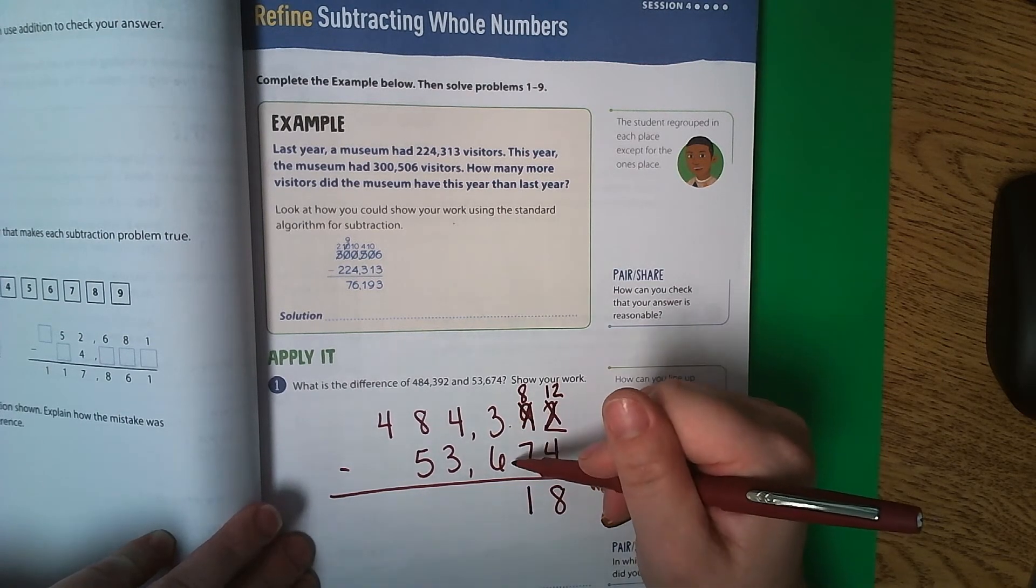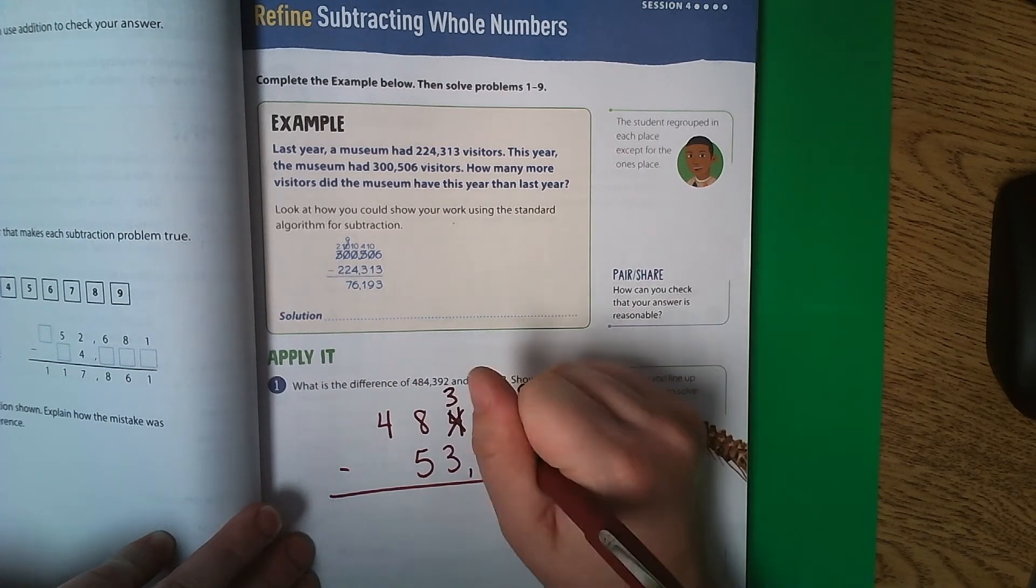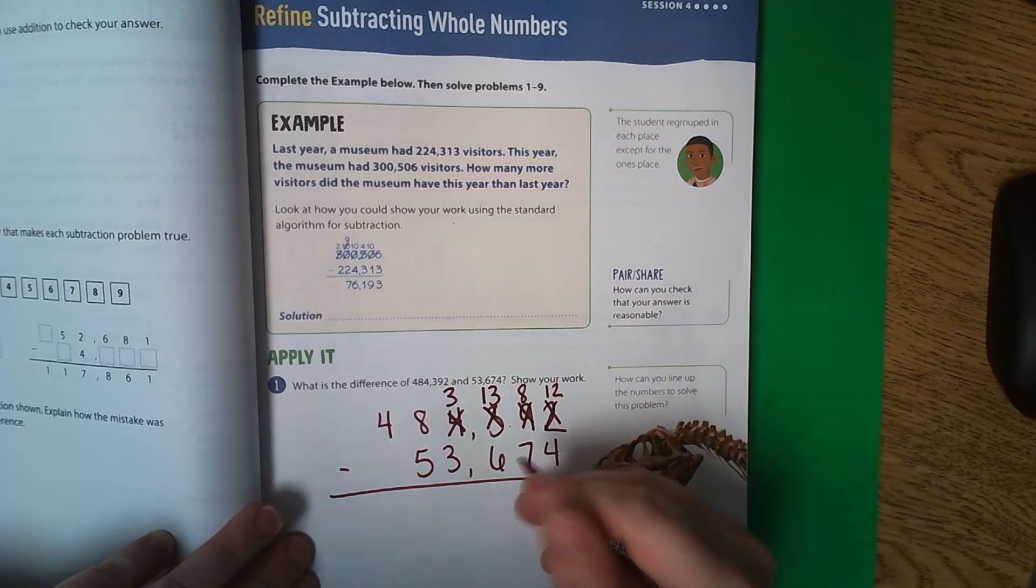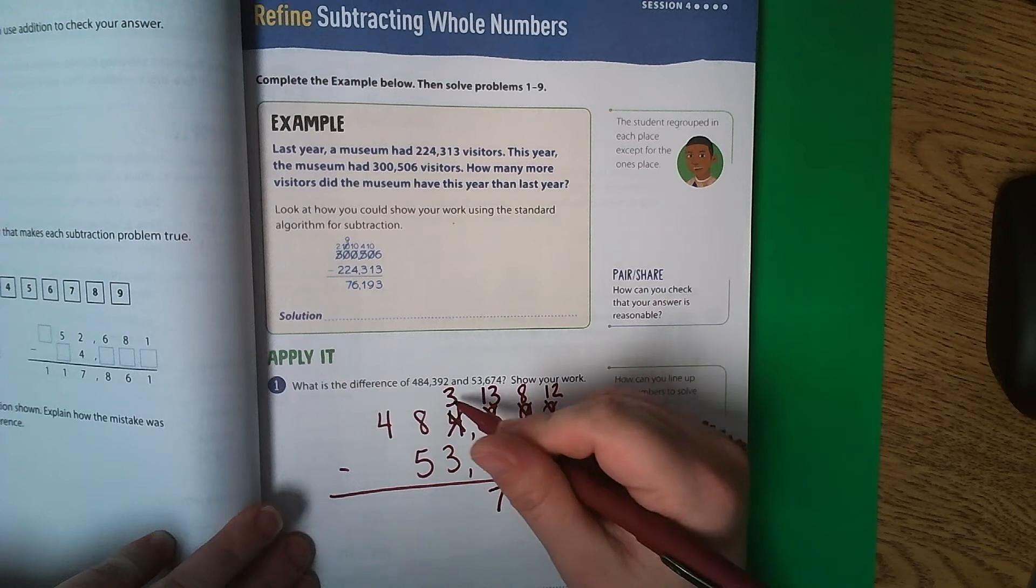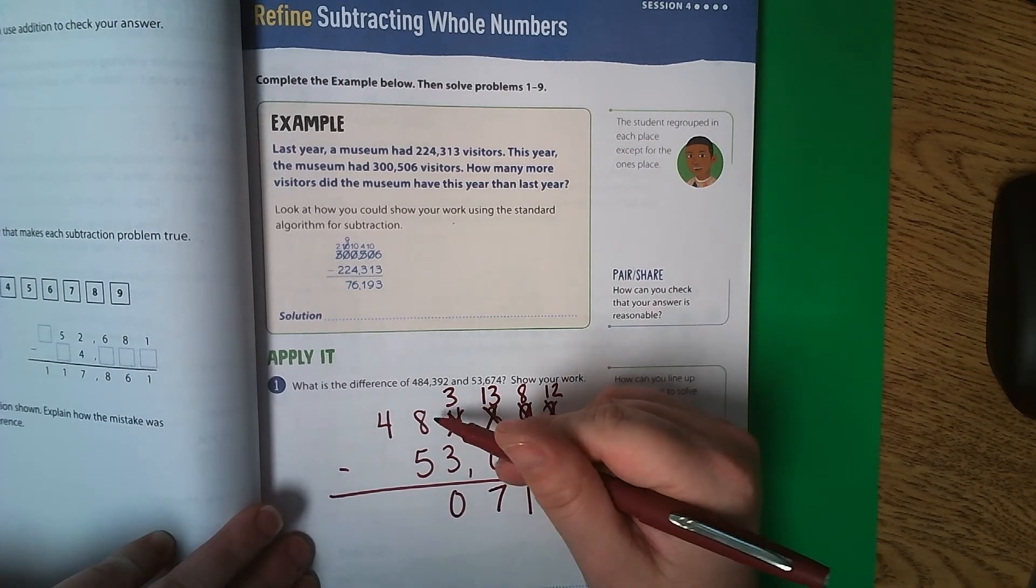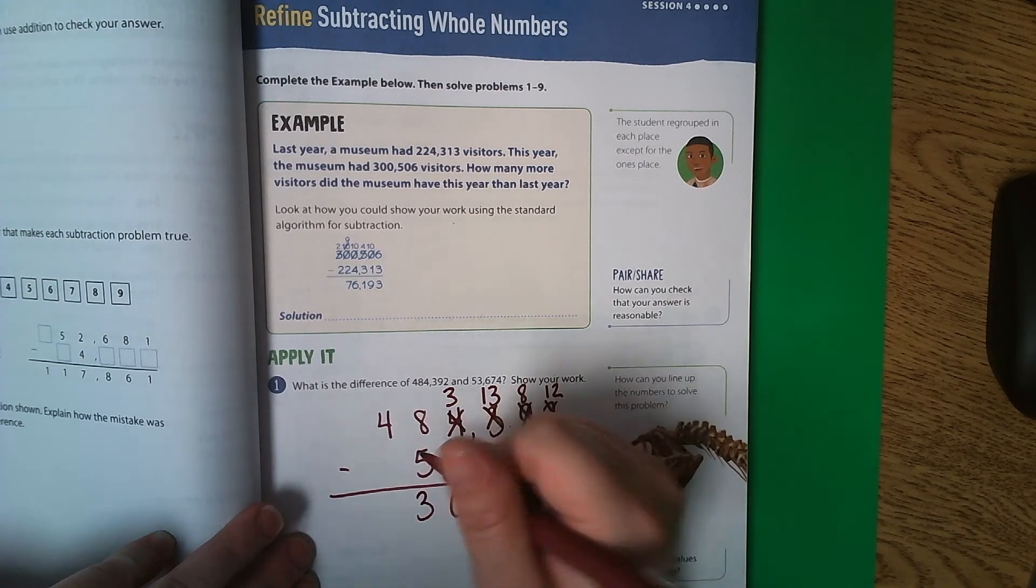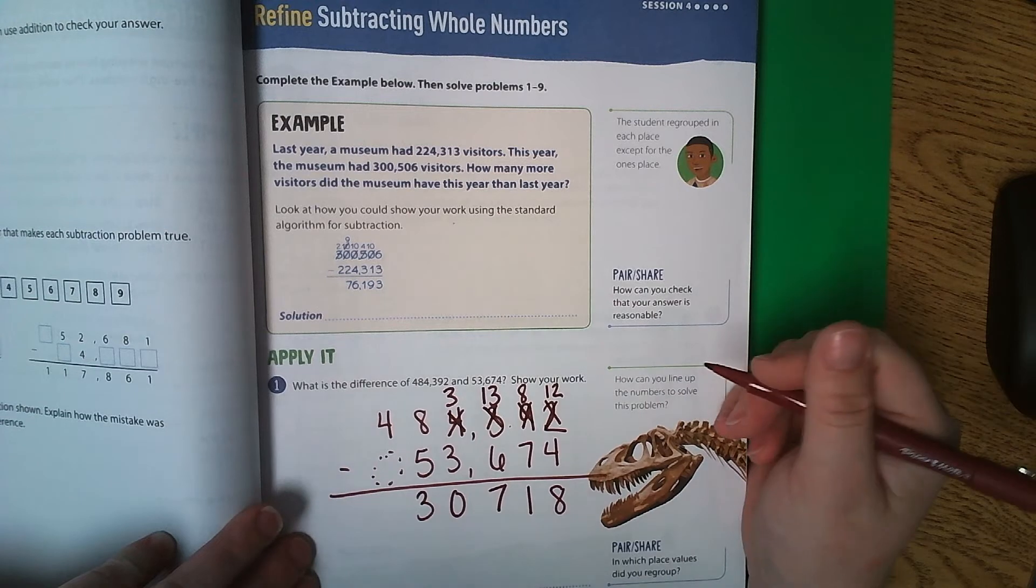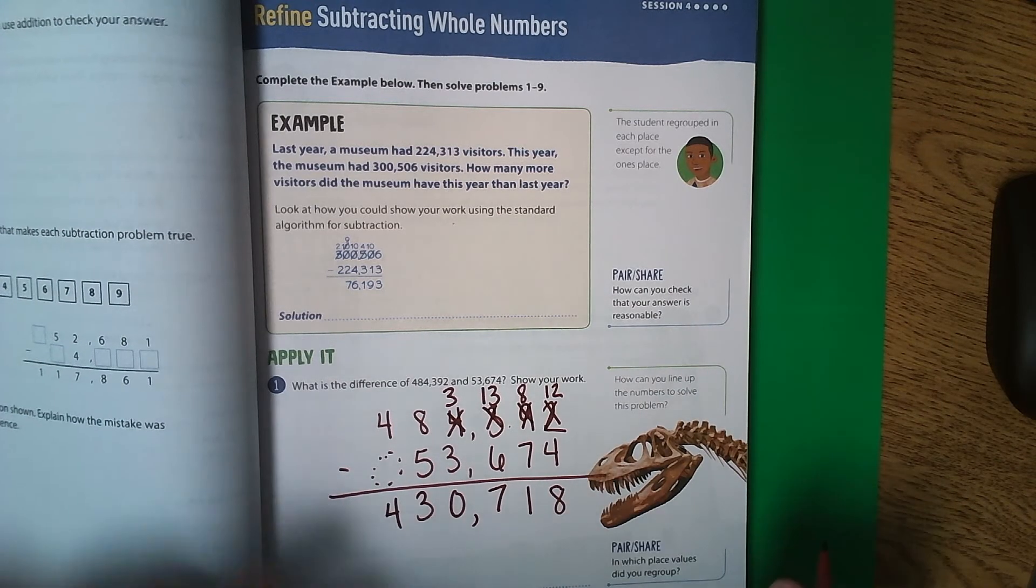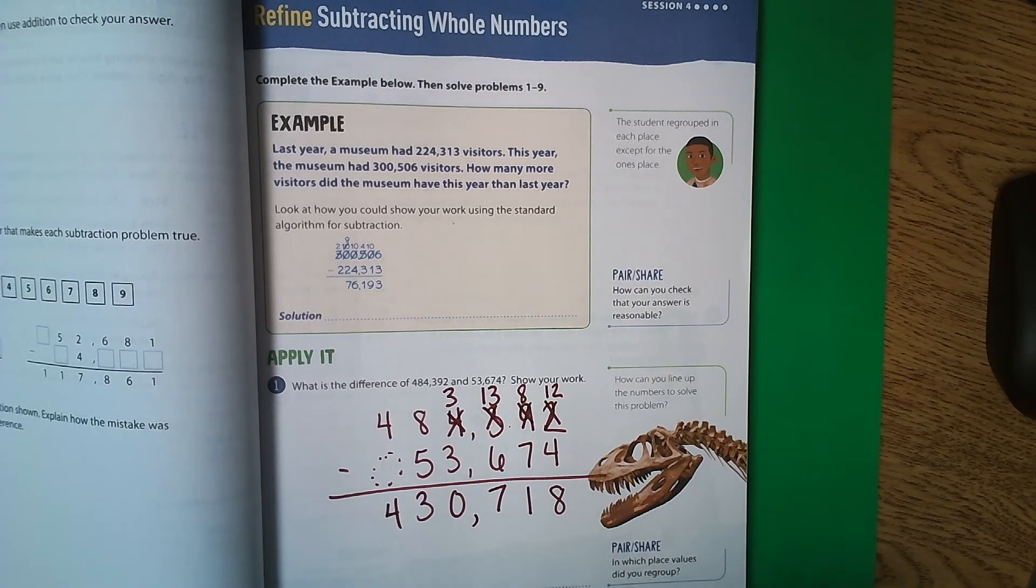8 minus 7 is 1. 3 minus 6, we cannot do that. So we're borrowing or regrouping. 3 becomes 13. 13 minus 6 is 7. 3 minus 3 is 0. 8 minus 5 is 3. And 4 minus an invisible 0 is 4. Don't forget your comma. So your answer is 430,718.